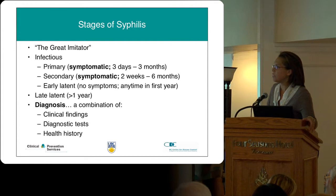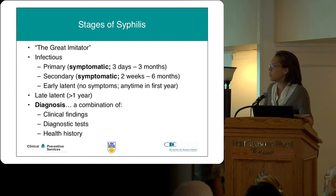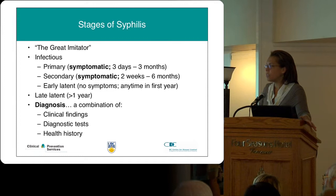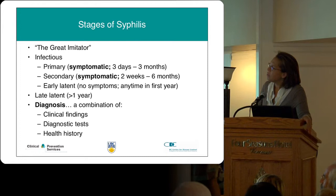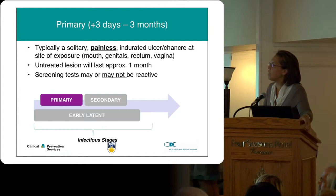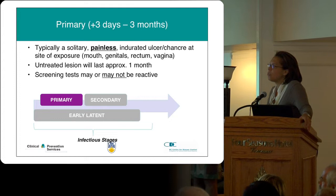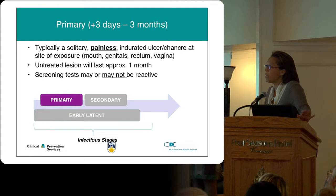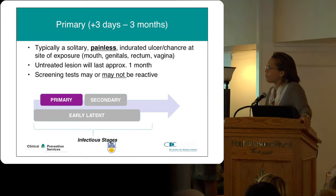The diagnosis is a combination of clinical findings, diagnostic tests, and health history. Primary syphilis is usually a solitary, painless nodule at the site of exposure — found in the mouth, genitals, rectum, or vagina — and the lesion usually lasts about one month. Depending on when you screen, the screening may or may not be reactive, so keep that in mind if you have clinical suspicion. And no STI presentation would be complete without pictures — here are some examples of chancres we've seen over the years.